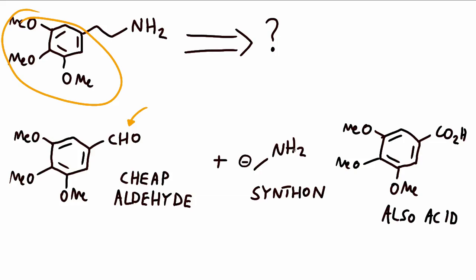So whilst this species obviously doesn't exist in the real world, it's a tool to help us think what sort of latent functionality that we need to introduce. And so an example synthon that might provide this functionality is the cyanide ion.